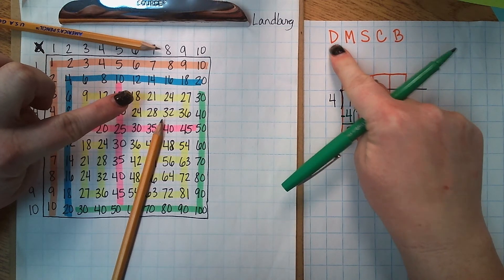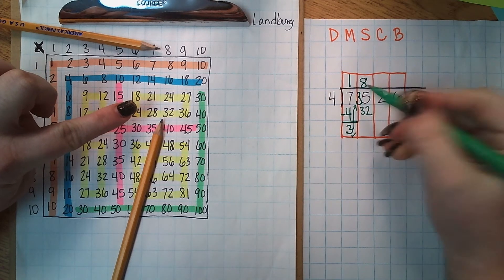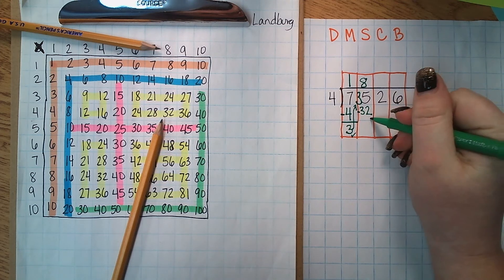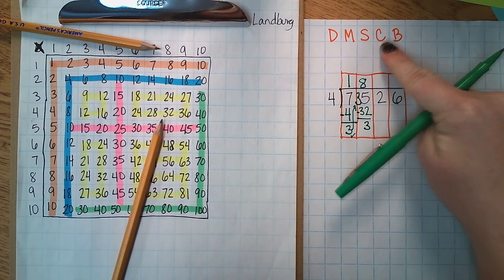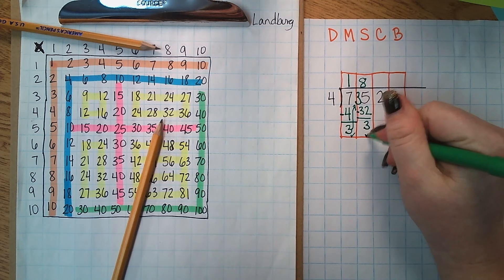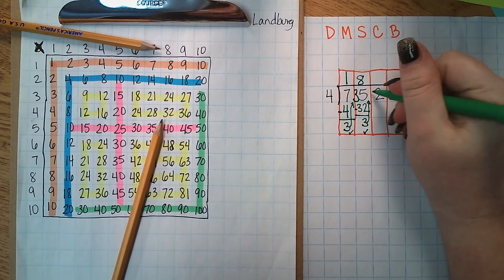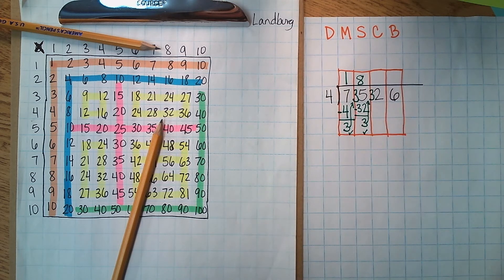The bottom pencil is pointing to the number that goes down here. I've taken care of my divide and my multiply step. So now I'm ready for my subtract. 35 minus 32 is three. Now I'm going to check my remainder. Is 3 smaller than 4? Yes it is. So now I'm going to bring up my remainder which is 32 and now I'm ready to start over again.